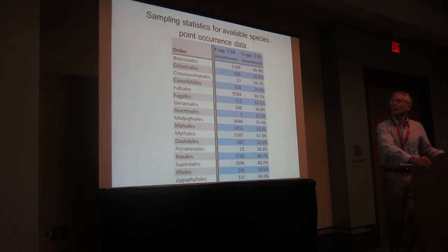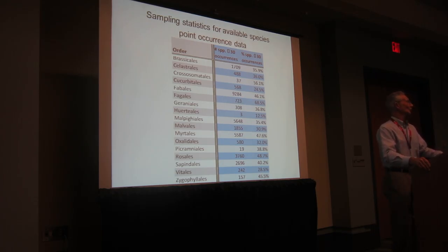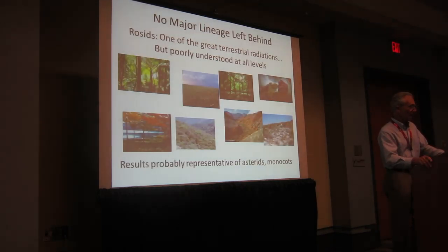The sampling statistics for available point occurrence data show just how poorly represented the rosids are. When we try to obtain data to do anything ecological with it — 35%, 36%, 20% coverage. These are low values, and what this means is that we cannot do anything meaningful at a global scale reconstructing ecological niche or looking at ecological evolution.